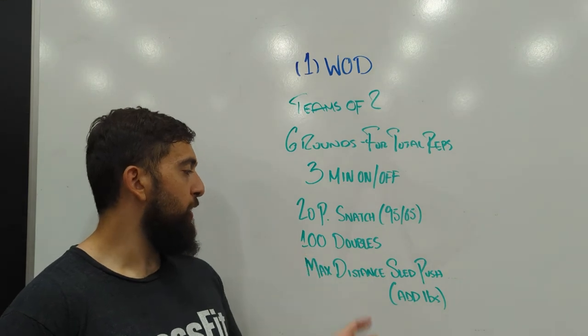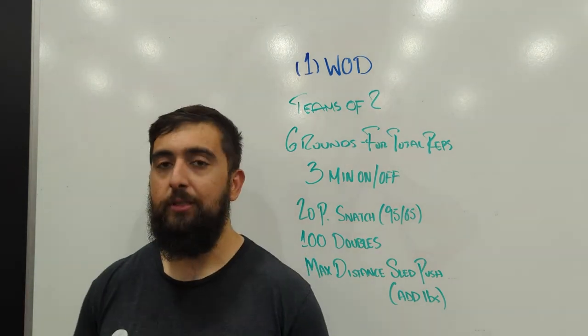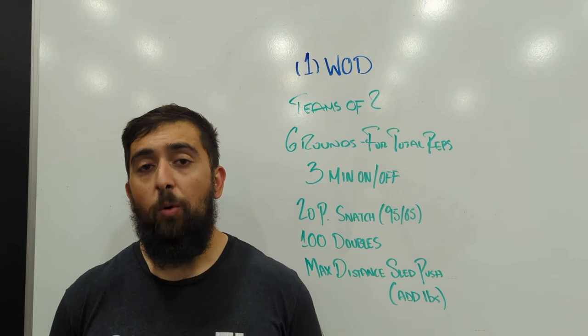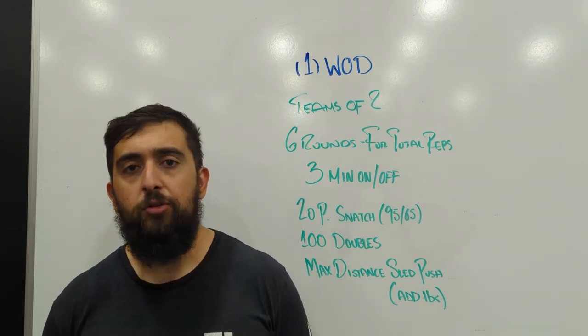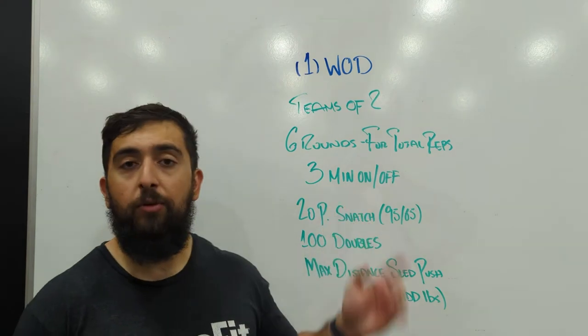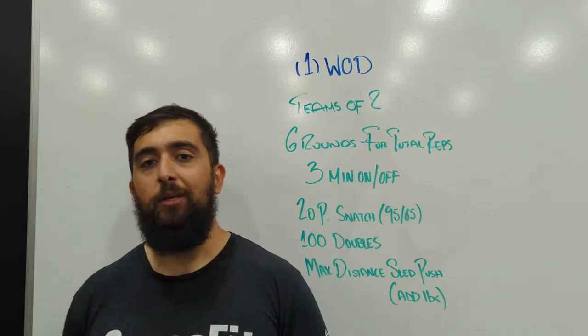Then once you've done the skips, we're going to go into max distance sled push. So in this, we're going to have the sled already weighted and I want you to push it with your partner as far as you can in the remaining time of the three minutes. Then that's going to be your score.